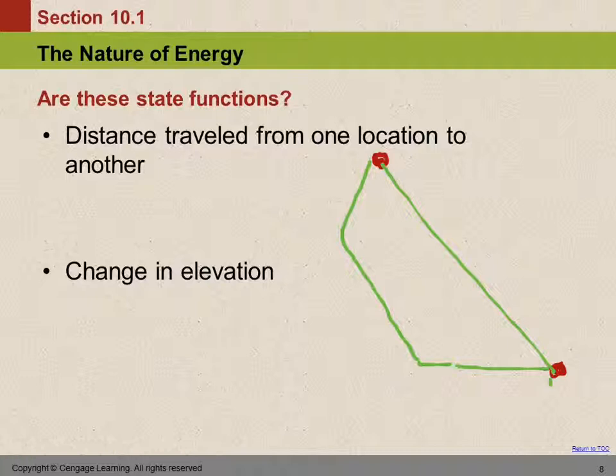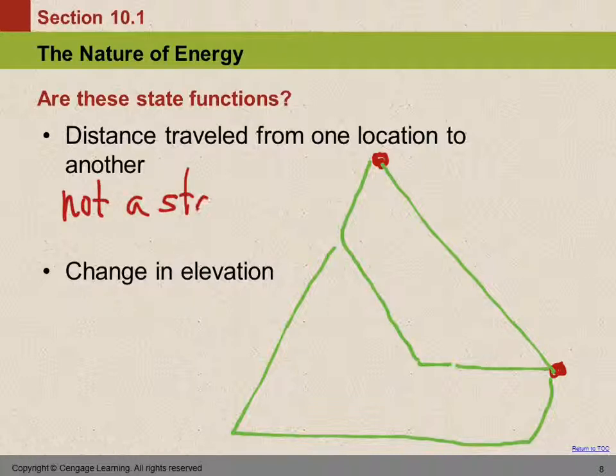Or we could go down to Kingsburg and then maybe out here to Carruthers or something and then come up this way. Why would we do that? Or you could head east and go all the way around the world and come back and get to Fresno. Is there a difference in distance based on your pathway? Yeah, there is. It varies a lot. So is distance a state function? No, because it depends on the pathway. So not a state function. A state function depends only on the state.